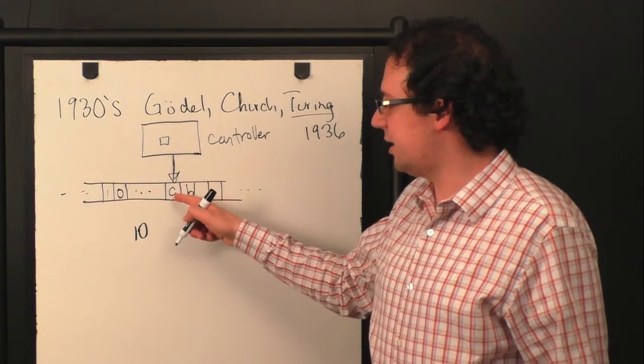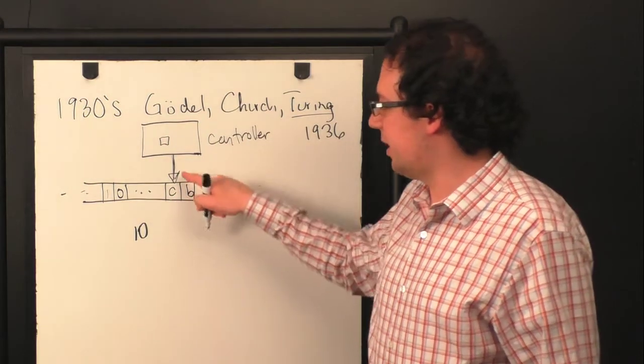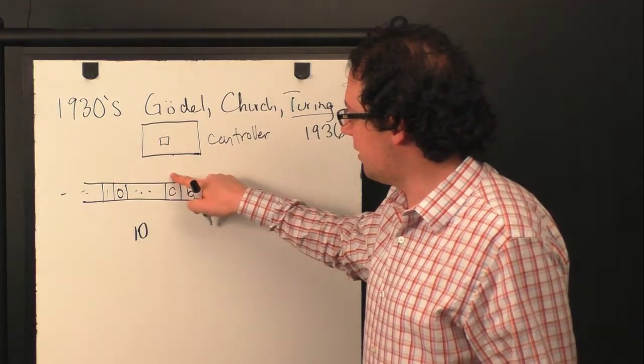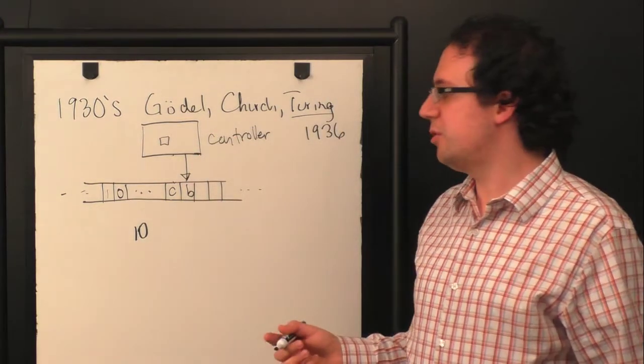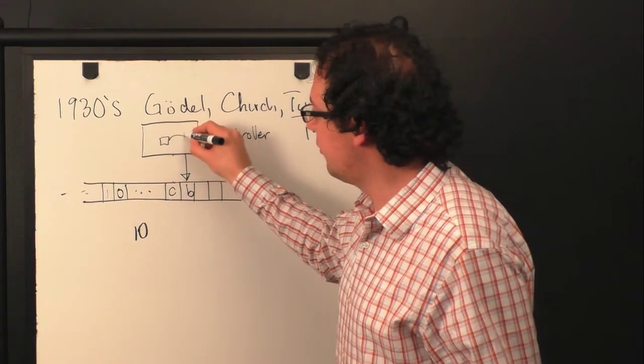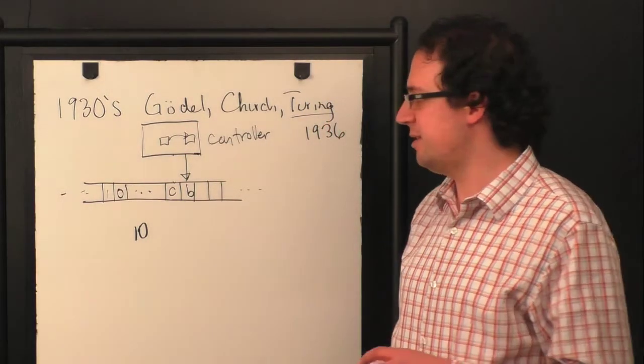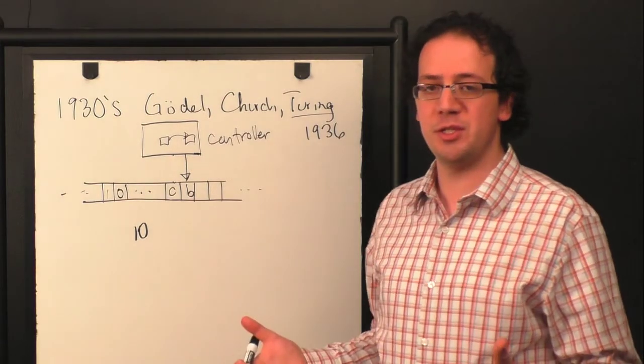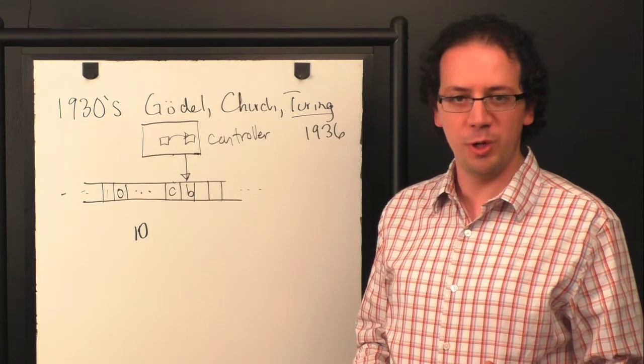Maybe it decides, given what's in this square, I actually need to look at the next square over. So instead of being here, it's now going to look at this square. Or maybe it says, I'm going to do one of those things, but also I'm going to move to the next instruction. So I've changed my internal state of mind. And this is essentially it. This is Turing's model of a computer, which we now call a Turing machine.